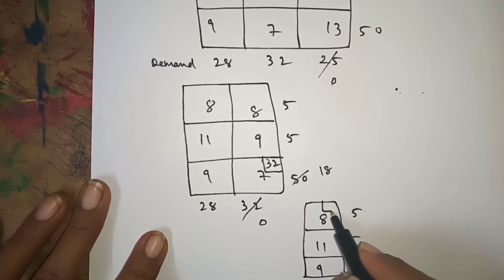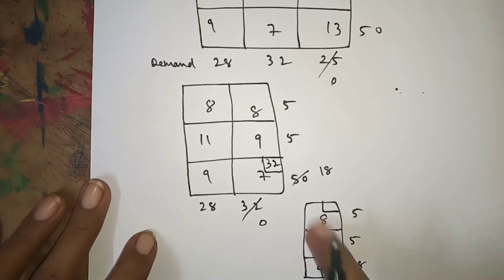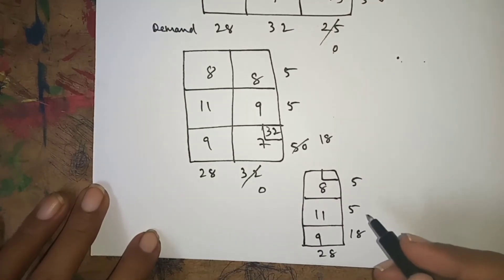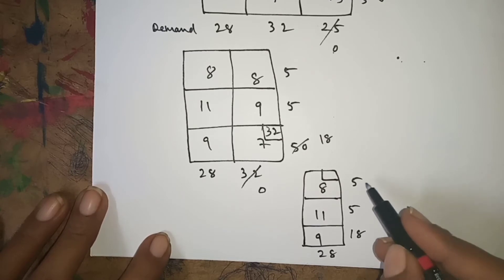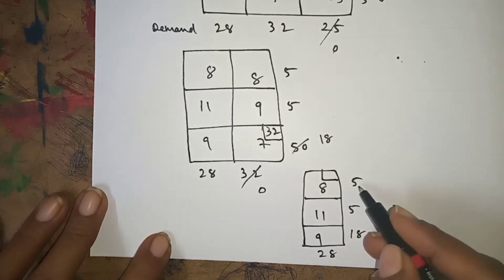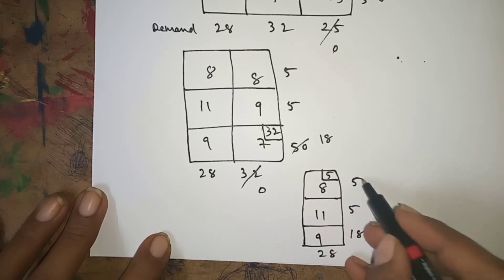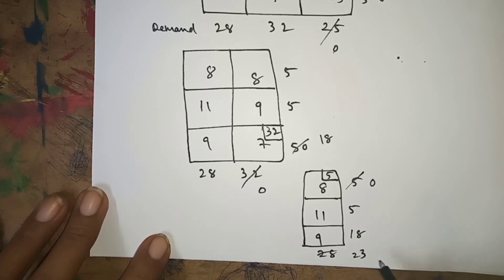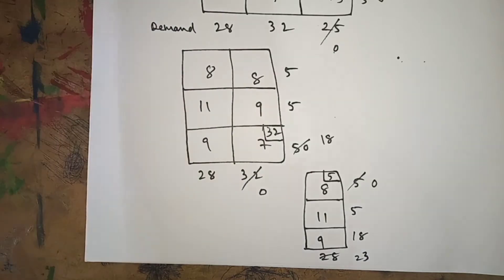Remaining values: 8, 11, 9 with supplies 5 and 18, and demand 28. In the complete remaining box, the least element is 8. The corresponding demand is 5 and supply is 28 — minimum is 5. I used 5, remaining is 23. Wherever you get 0, just omit — here I got 0, so I'm omitting.